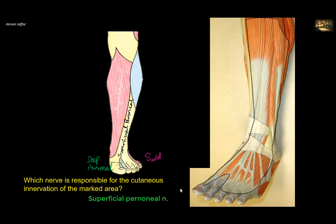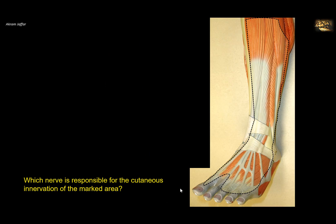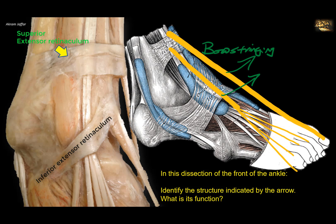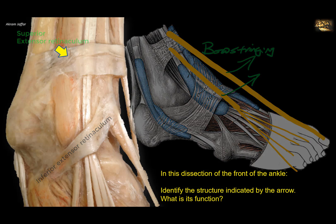In this dissection of the front of the ankle, identify the structure indicated by the arrow. What is its function? This is a thickening of the deep fascia of the leg called the extensor retinaculum. There are two extensor retinacula here — this is the superior extensor retinaculum. These retinacula plaster the tendons and prevent bowstringing during muscle contraction.